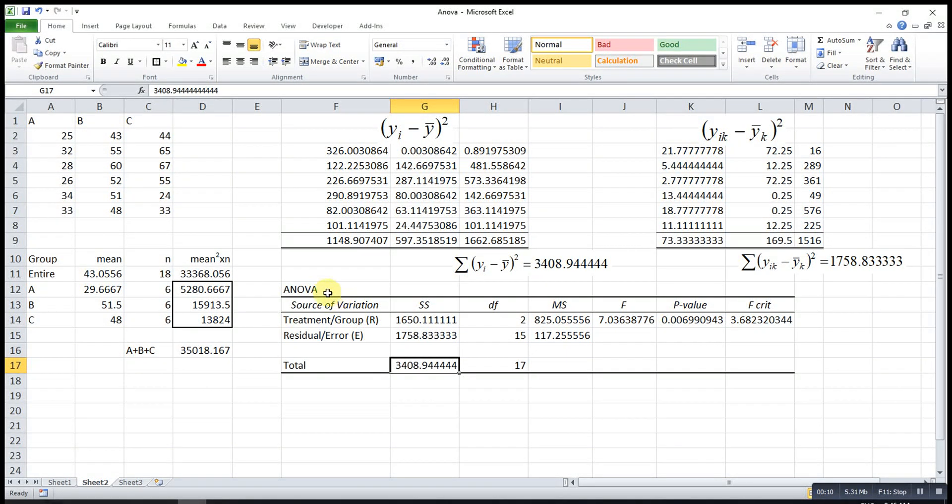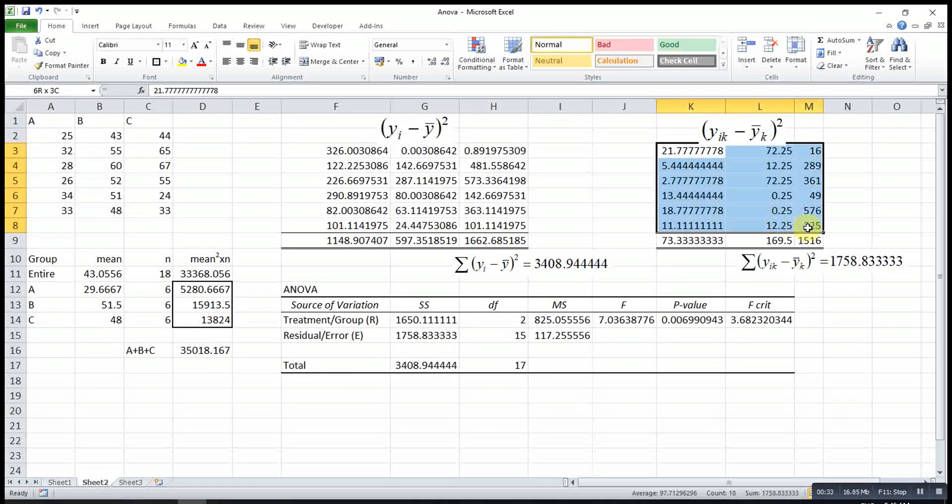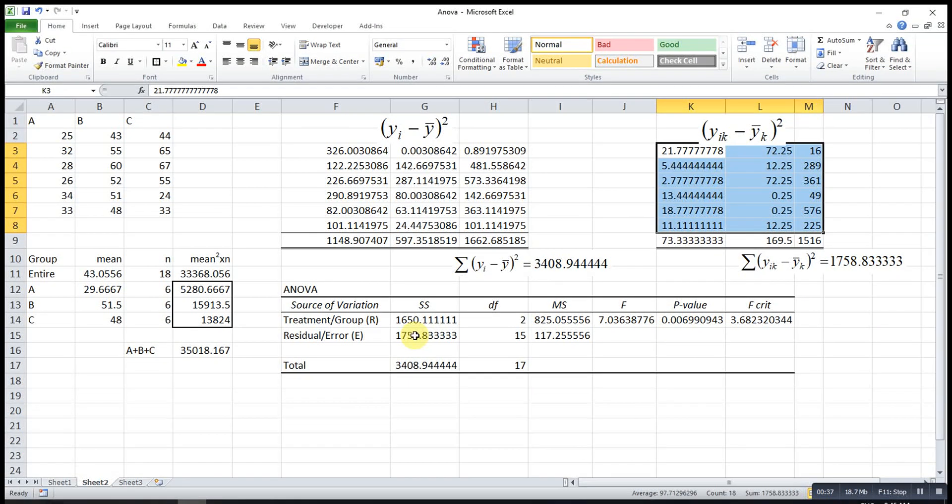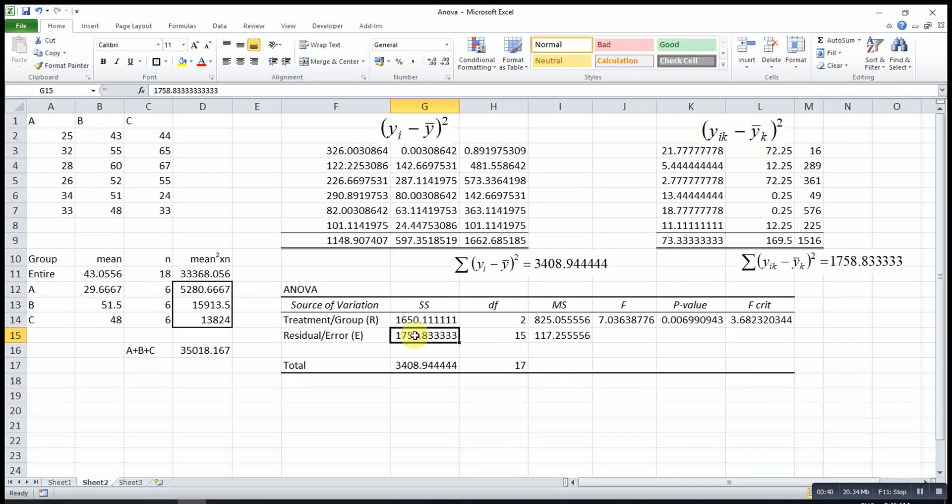When we construct an ANOVA table, we usually first find the mean value for each group, then the mean value for the entire group. Secondly, we take each individual value, minus their respective mean, then square, in order to obtain the square errors within groups. After that, we take the sum of all these square errors to obtain the sum of square errors, or sum of square residual.